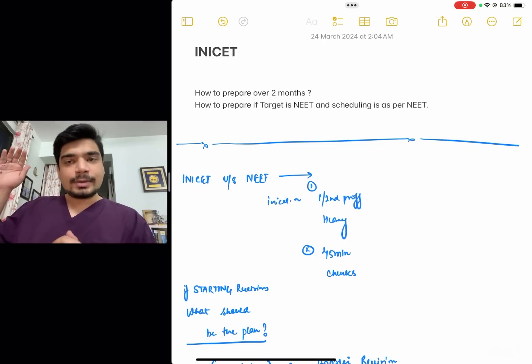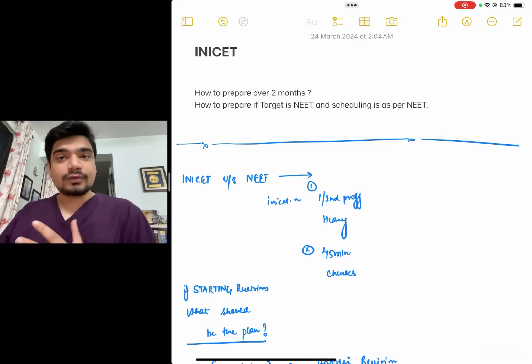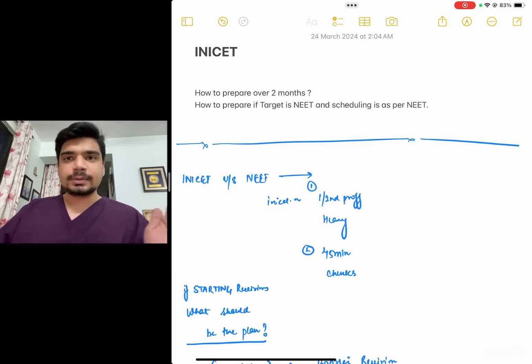The second category of people is those who are preparing for NEET in June, but they want to give INI, they want to give INI a best shot. They are not really confident about INI, but they feel that if they give a shot, they might have a chance.